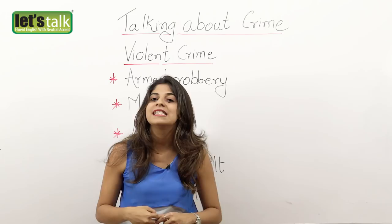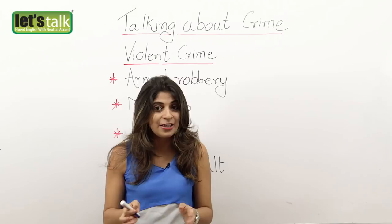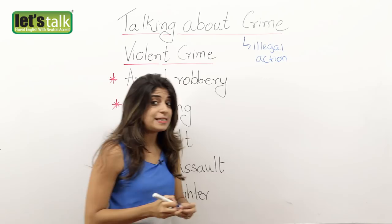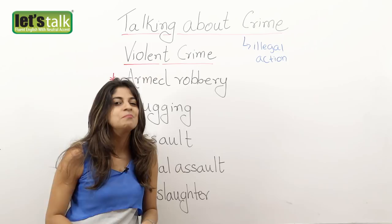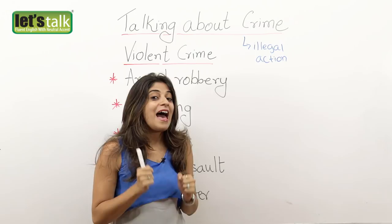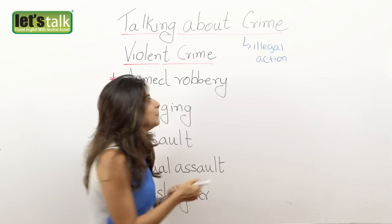So first let's understand what is crime. Crime is an illegal action or an illegal activity. For example, killing your boss is a crime — even if he is a terrible boss, yes, unfortunately it's very much a punishable crime. Well, just kidding. So crime is an illegal action or activity, and the person who commits a crime is called a criminal.